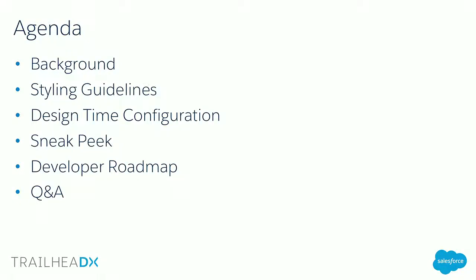So the agenda: I'm going to go over some background about App Builder pages, page templates, and components. We'll talk about styling guidelines to help make sure your component looks good and renders well in the App Builder. We'll talk about design time configuration — the properties that show up on the right-hand side of the App Builder. We'll do a sneak peek into an upcoming feature, talk about the roadmap, and finish with Q&A.